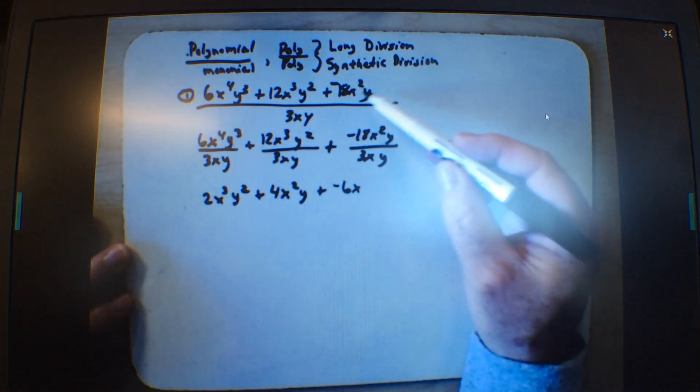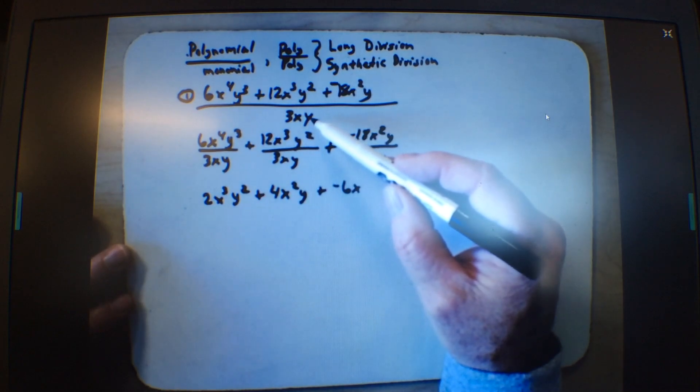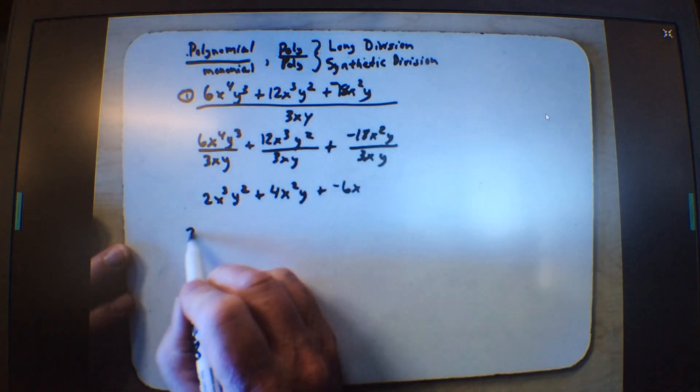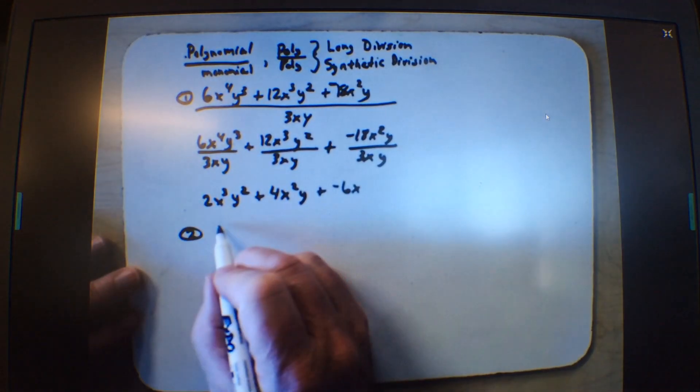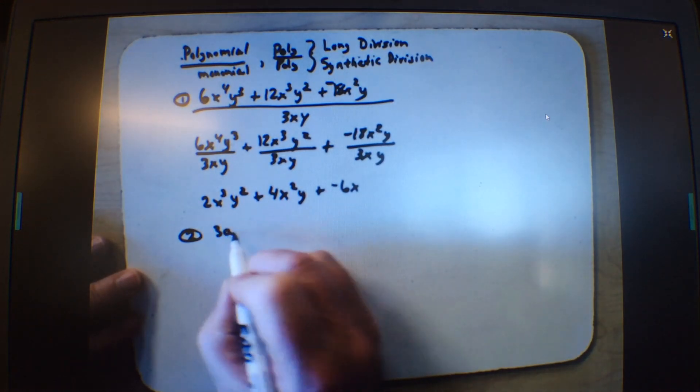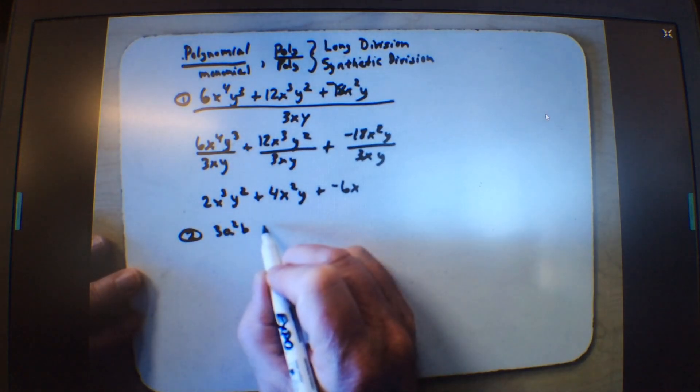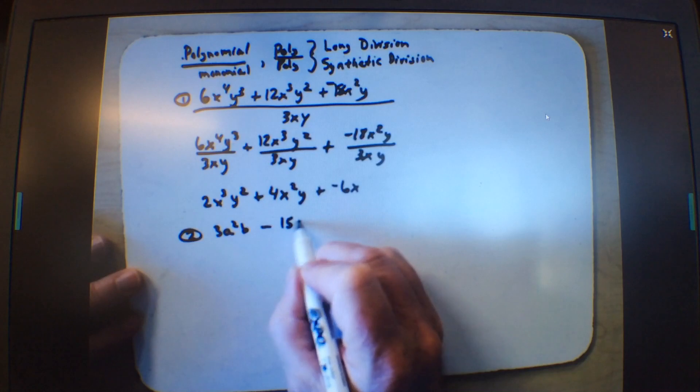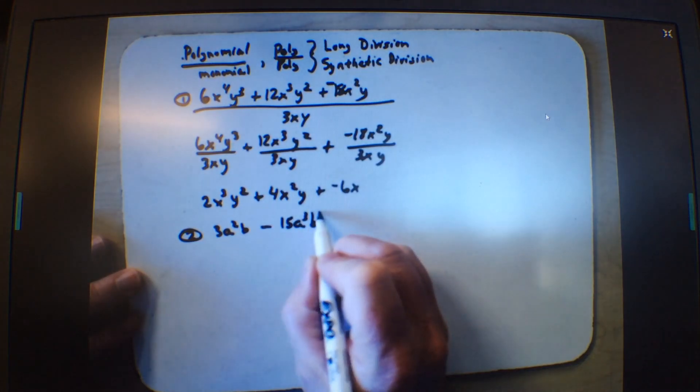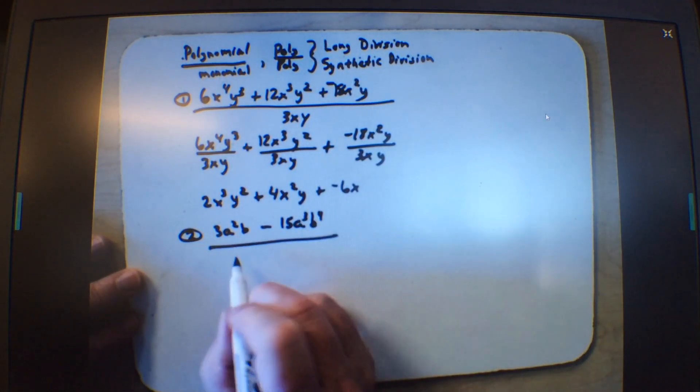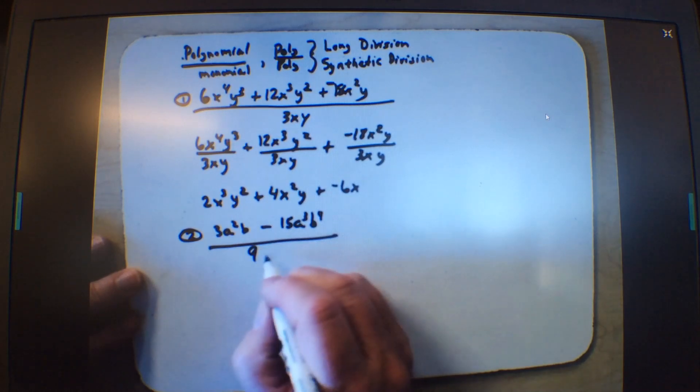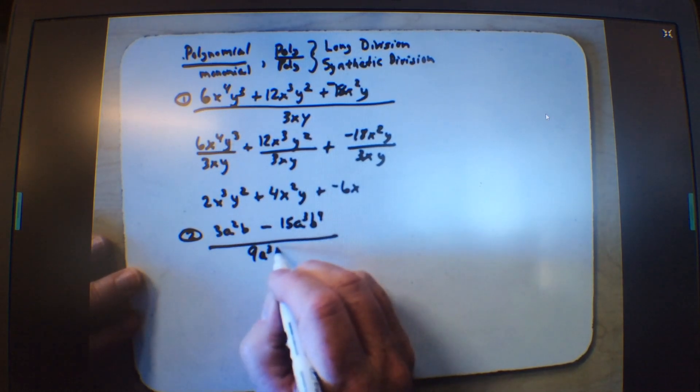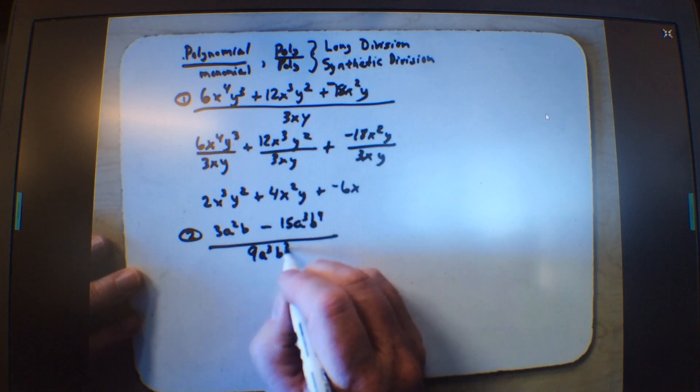Now, that works great when this is smaller than all three, but sometimes you get something like this. So it's 3a squared b minus 15a to the 3rd, b to the 4th, over, let's go 9a cubed b squared.